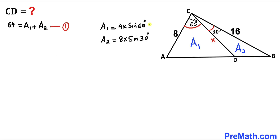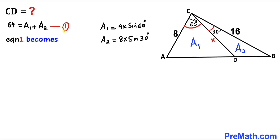We have now found both areas A sub 1 and A sub 2. Our task is to find the value of x. Substituting into equation 1, we get: 4x·sine(60°) plus 8x·sine(30°) equals 64.